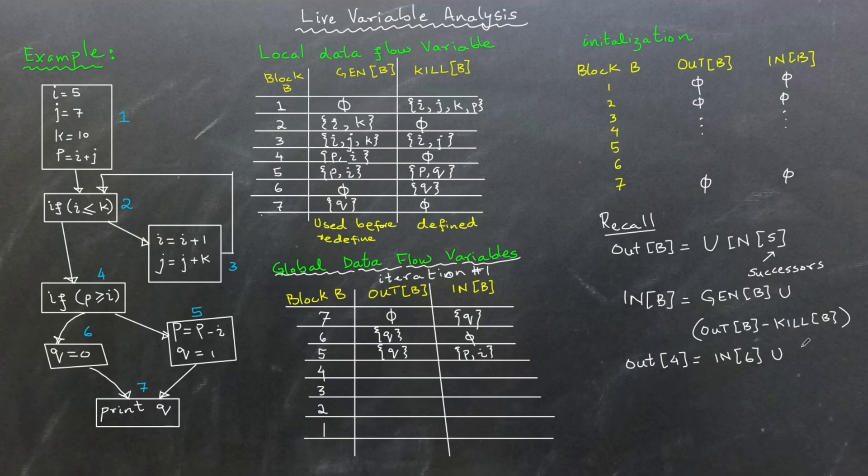Out 4 is the union of in 6 and in 5 which result in the set p and i. In 4 is then computed as the union of gen 4 which contains p and the difference between out 4 and kill 4. Since out 4 is already empty, the result does not depend on kill 4. Therefore, in 4 contains p and i.